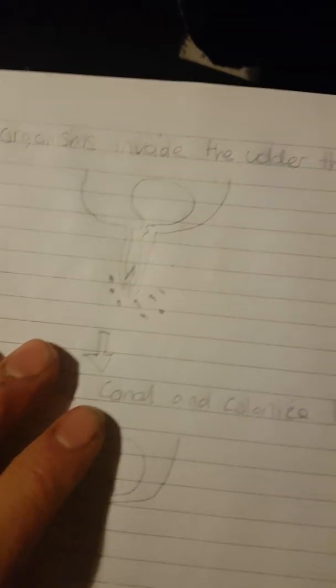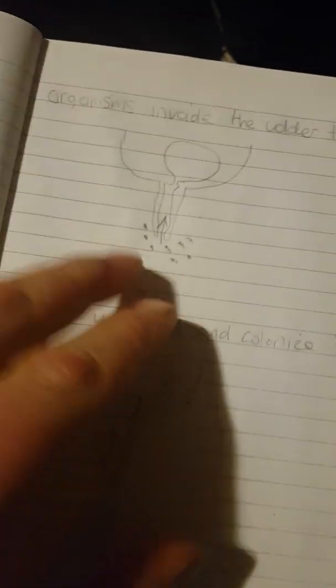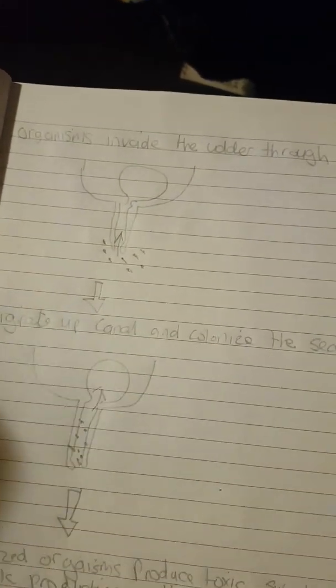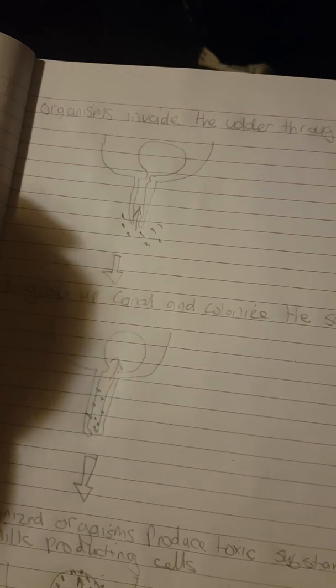I've obviously got like a little diagram. So basically you've got one of your cow's titties here. These little dots are basically the organisms. The organisms, obviously after milking, if you don't dip your cows proper to close the teat, then this could be a proper problem.